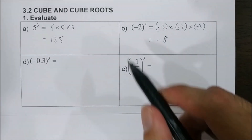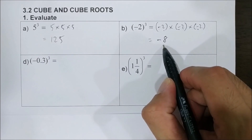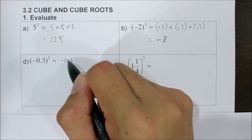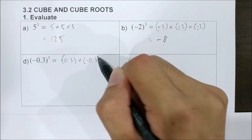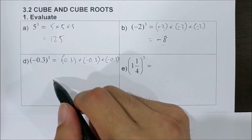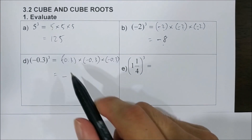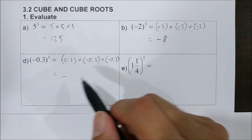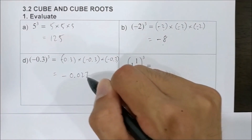Remember, when you cube a negative number the answer is always negative. So negative 0.3 cubed means negative 0.3 times negative 0.3 times negative 0.3, and the answer is negative 0.027.